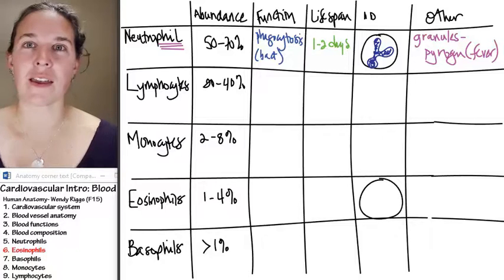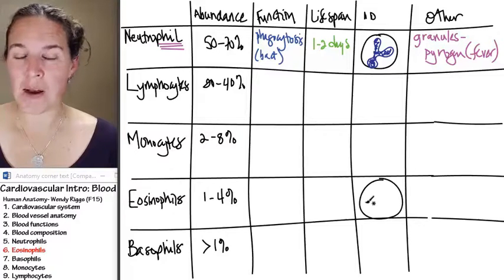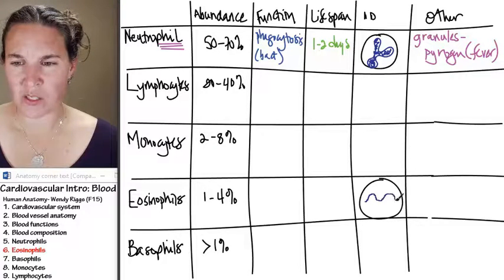Eosinophils look like that. They have a similar weird looking nucleus. It's kind of a bilobed nucleus.